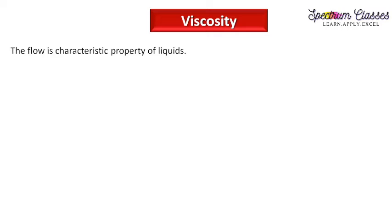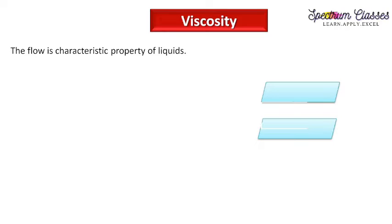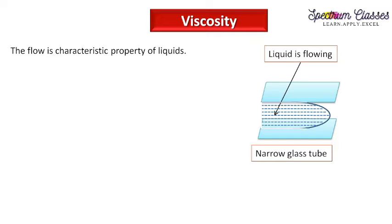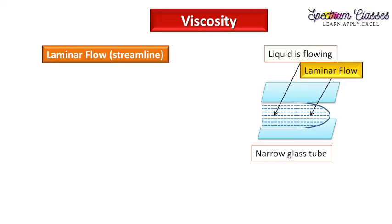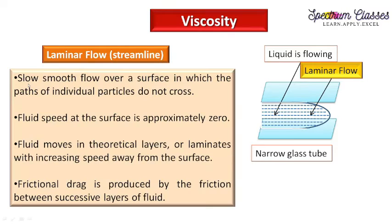Since flow is the characteristic property of liquids, I'll show you an example in this figure. Suppose this is a narrow glass tube and liquid is flowing through this tube. This type of flow is known as laminar flow. Laminar flow is also known as streamline flow — smooth flow over a surface in which the path of individual particles do not cross. This point is important: the path of individual particles do not cross.